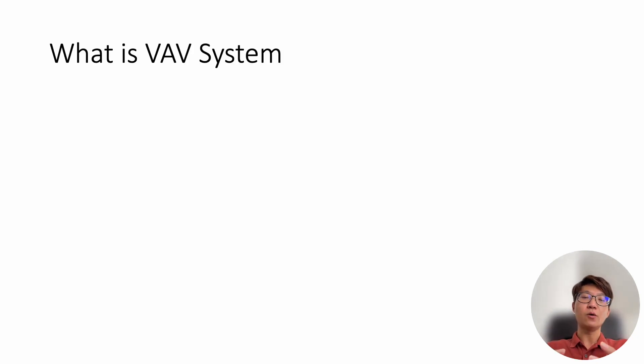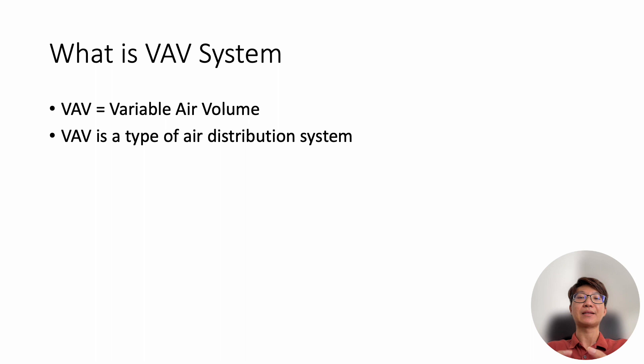So first of all, what is a VAV system? VAV stands for variable air volume. It is a type of air distribution system. Many people misunderstand that VAV actually is just the VAV box, but it's actually a few components that make up the system. It's a type of air distribution system.